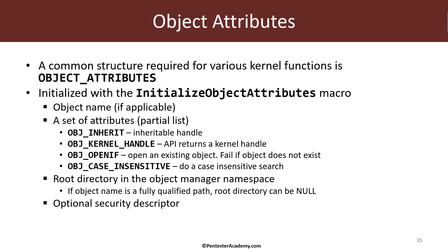Another thing you can specify is the root directory in the object manager's namespace — the namespace visible with a tool such as WinObj, which we'll examine later with a specific driver example. If you are not providing a fully qualified name for the object, you can set a root directory as a base, and the name you provide will be the continuation from that location. There is also an optional security descriptor you can provide, and I'll demonstrate how to use all of this later on.